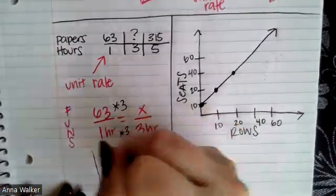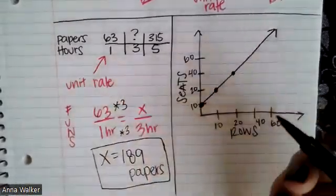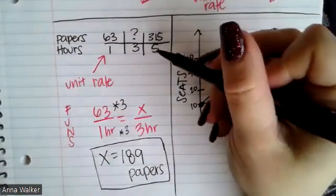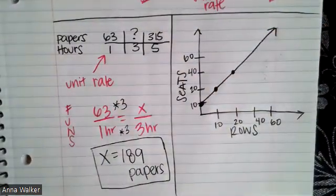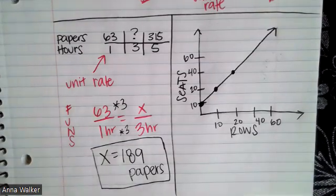I could have also used the other ratio they gave me of five hours is equal to 315 papers. I could have done it that way as well. I would have gotten the same answer.